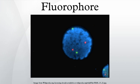Often dyes are used inside cells, which are impermeable to charged molecules. As a result, the carboxyl groups are converted into an ester, which is removed by esterases inside the cells — for example, fura-2-AM and fluorescein diacetate.